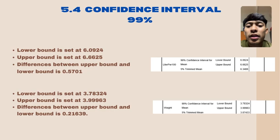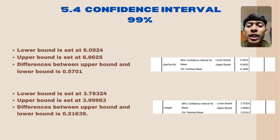Explanation of confidence interval 99%. The descriptive output table shows our 99% confidence interval for the mean confidence in liter per hundred has been calculated. The lower bound is set at 6.0924 and the upper bound is set at 6.6625. For weight, the lower bound is set at 3.80950 and the upper bound is set at 3.9963. The difference between upper bound and lower bound for the 99% confidence interval for the mean confidence in weight is 0.21639.